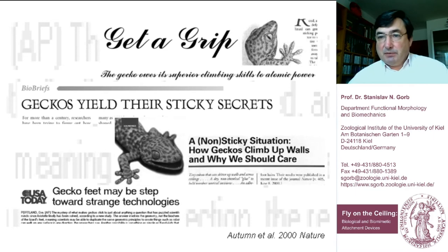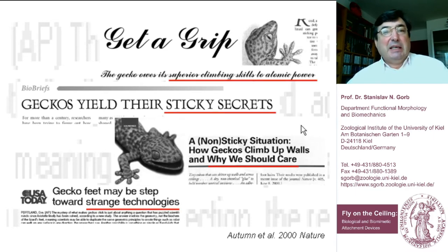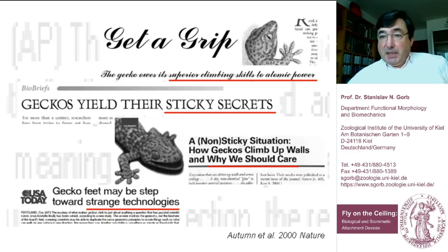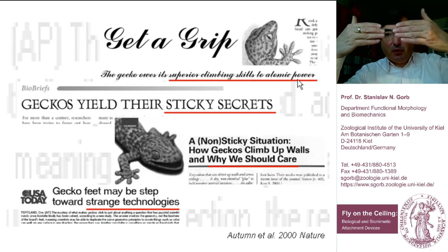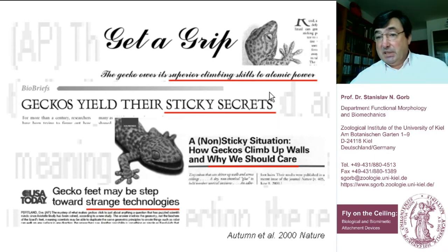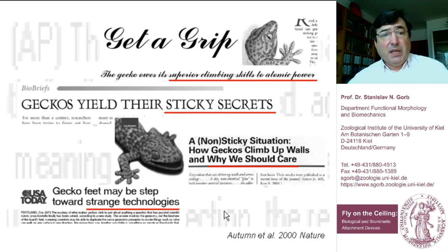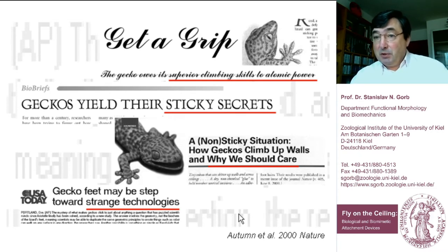Today we speak about adhesion. The gecko is of course well-known — it is a kind of king of adhesion. Papers by groups in the U.S., like Keller Autumn's work in Nature around 2000, found that these animals use so-called van der Waals interactions to attach to any surface. These are forces between atoms and molecules of two contacting surfaces. Even knowing that, for biologists the question remains: which structures, and what exactly is the relationship between the morphology of the foot and the adhesion the animal can generate?